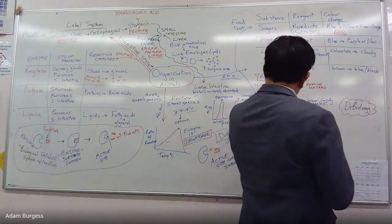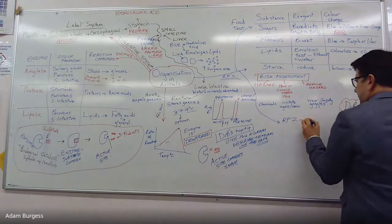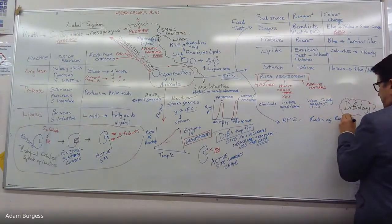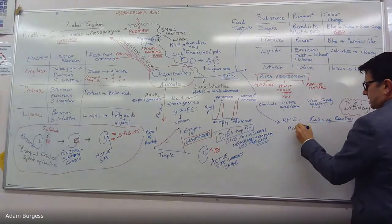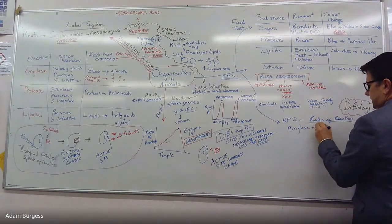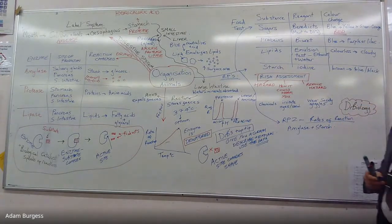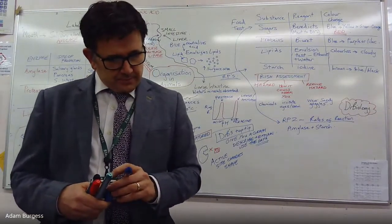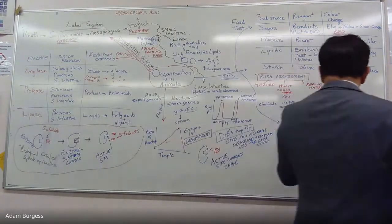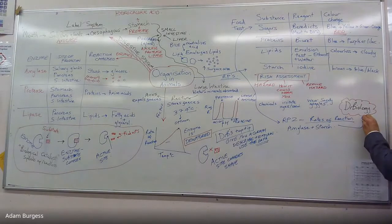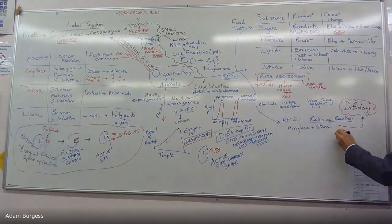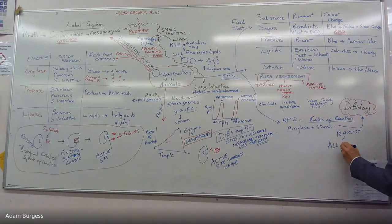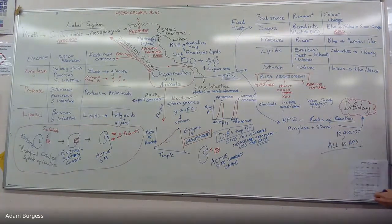The second required practical is just looking at rates of reaction. The common one they use is amylase and starch, measuring the rates of reaction or looking at the effects of different things like temperature or pH. What I'm going to suggest you do is go to my YouTube channel. There's a playlist with all 10 required practicals for GCSE Biology, including this one.